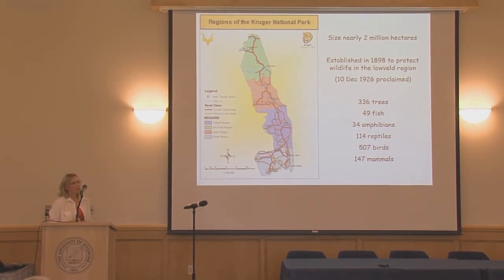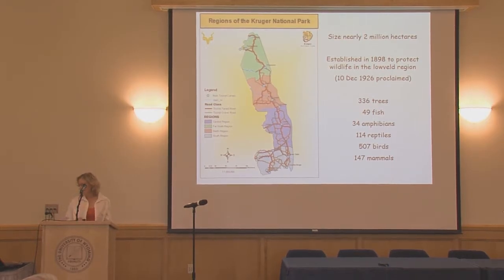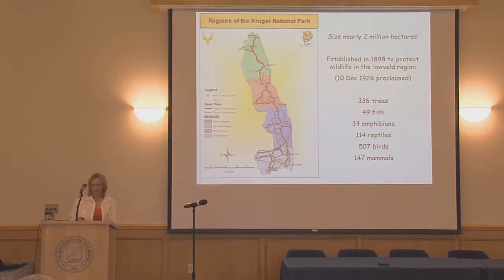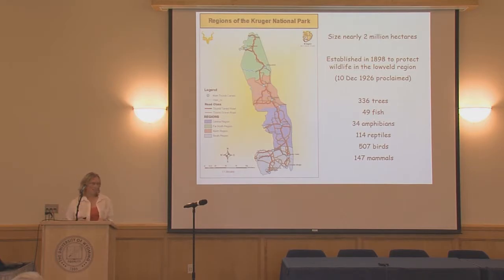Zooming into Kruger, it is about 2 million hectares in size, established in 1898 and officially proclaimed in 1926. This is the park where research actually started, so it's where we have the most data — really good species lists for animals, plants, geology, and weather. Kruger is our flagship park and the one that attracts the most overnight visitors, making it most important for income generation because Kruger sustains many of our other parks.